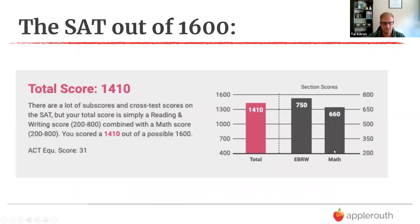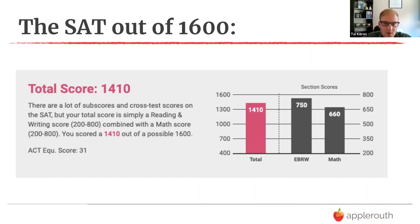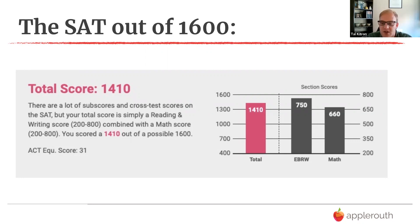The SAT is scored out of 1,600. What comes up on a student's account page — same for me as the tutor — is a full report: questions missed, questions correct, question types, where points were lost, and so on. This student scored 750 on verbal and 660 on math. It's a very strong score, probably 96th or 97th percentile, equivalent to an ACT score of about a 31.